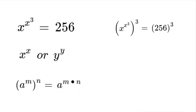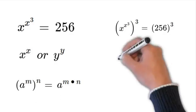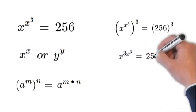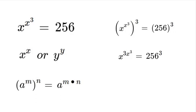So we have a to the m to the n is equal to a to the m times n. That is a tongue twister. So let's go ahead and do that. So then it will be x to the power of 3x to the power of 3, which equals 256 to the power of 3.